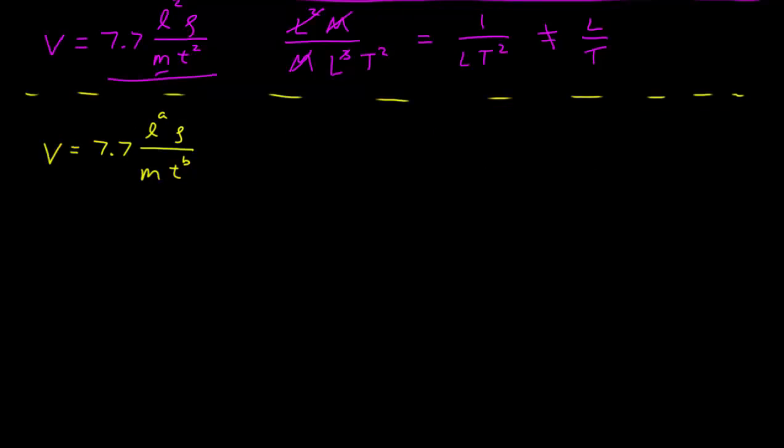In my final example, let's go back. Let's say that you did know that this velocity was in this form. It's proportional to density, inversely proportional to mass, and it's proportional to length to some power a, you just don't know what a is, and it's inversely proportional to time to some power b, you just don't know what b is.